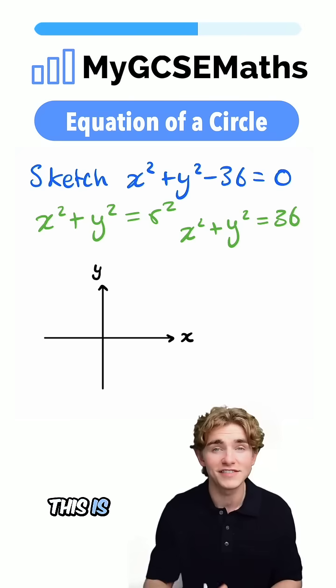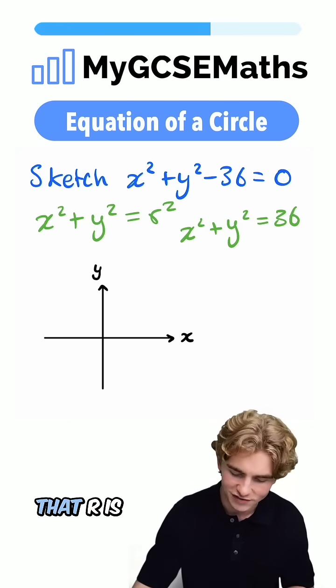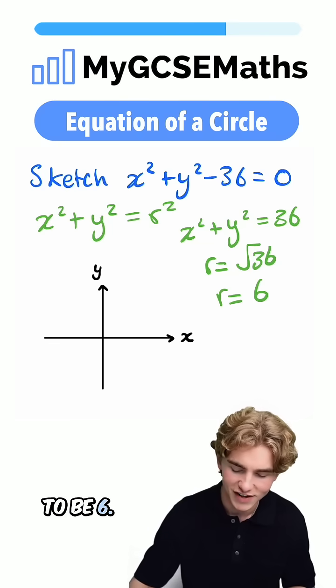Now we can see that this is a circle where r² = 36. That means that r is going to be equal to the square root of 36. The radius of our circle is going to be 6.